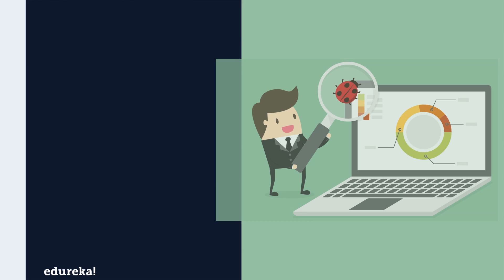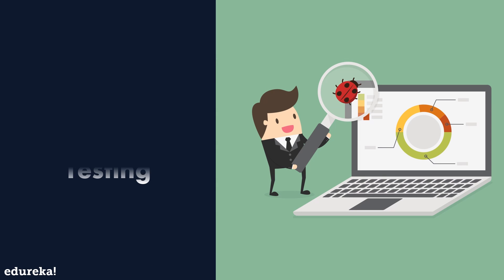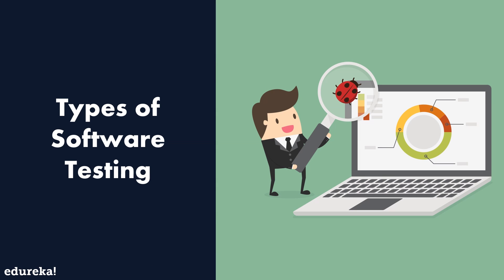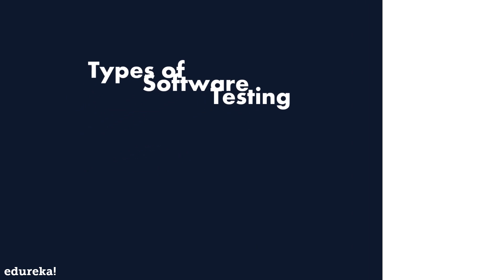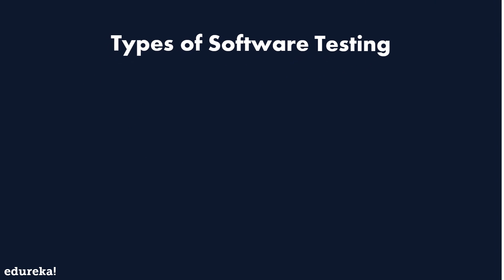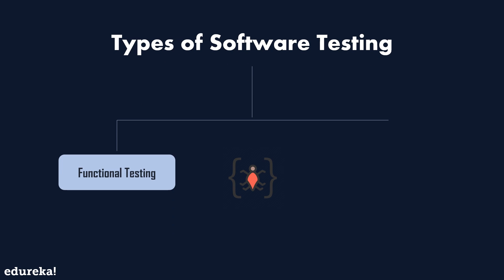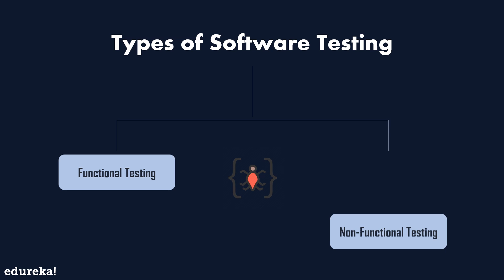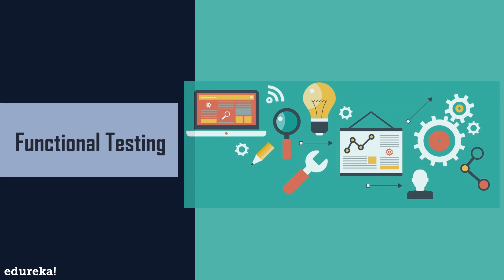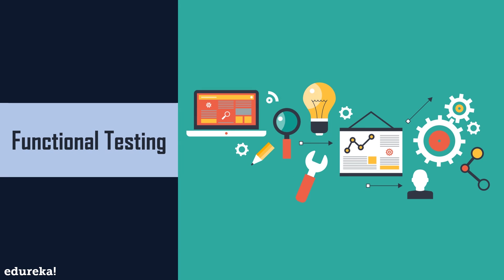Now let's have a look at the different types of software testing. Software testing is basically divided into two major types: functional testing and non-functional testing. For today's session, our focus will be on the functional testing type.